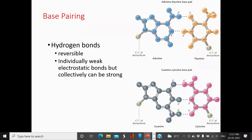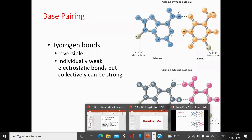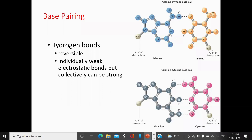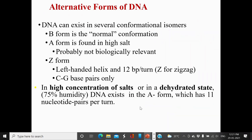This base pairing rule, given by Chargaff, is very clear in all organisms. On the basis of chemical data from Chargaff and the structural crystallographic work of Wilkins and Franklin, Watson and Crick proposed the double helix DNA model. In subsequent years, they received the Nobel Prize for this DNA model.